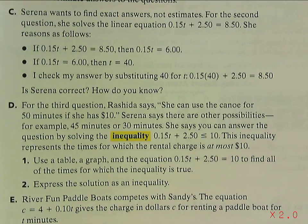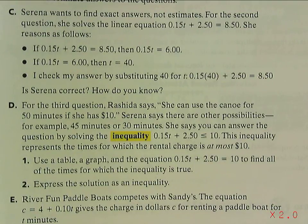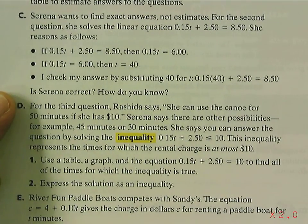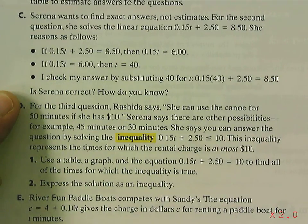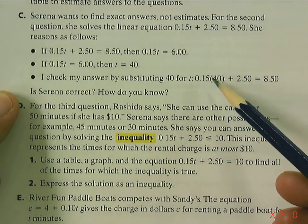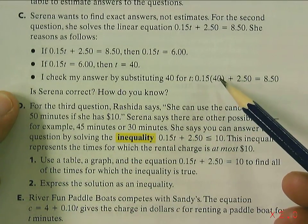For Problem 2.3, Part C, we've actually already found the exact answers by using the equation. As you look at Part C, the idea is that we can check our answer by putting the amount that we found back into the equation. We said for $8.50 it was 40 minutes, and that should work out if we put it in the calculator.